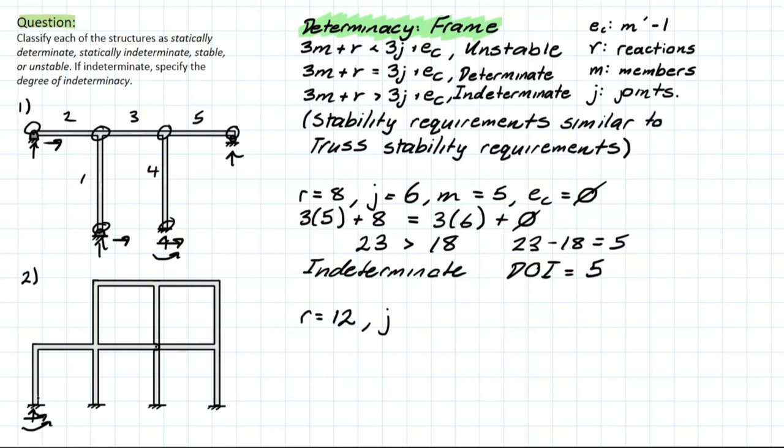Moving on to joints, we have 1, 2, 3, 4, 5, 6, 7, 8, and then 9, 10, 11. So 11 joints. A number of members as well. You can count them out. 1, 2, 3, 4, 5, 6, 7, 8, 9, 10, 11, and 12. We have 12 joints.